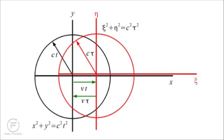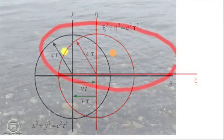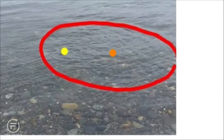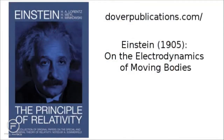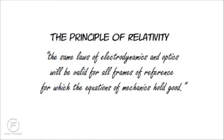Consider our two coordinate systems. If we send out a flash of light at time zero when their origins coincide, and if the speed of light is the same in both frames and in all directions, it means that both frames perceive their origin to be the center of the same expanding wave, even though those two origins are moving apart. How can two different circles be the same physical object? Or how can one circle have two different centers?